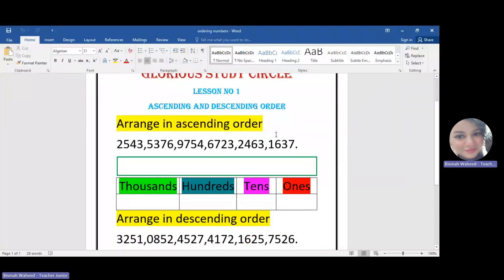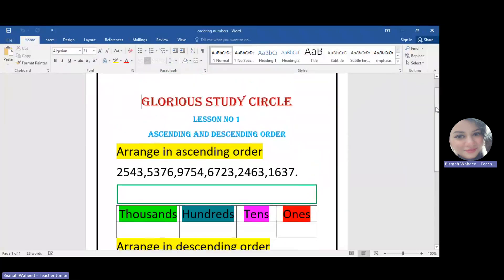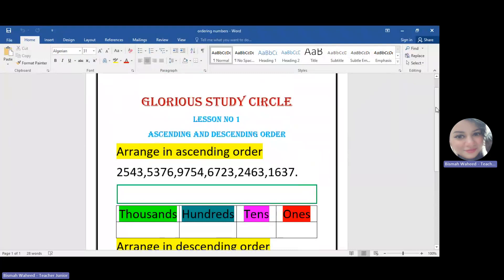First of all, we should know what does it mean by ascending order and what does it mean by descending order. Keep one thing in your mind: ascending means to move upward and descending means to move downward. Descending is from down, so descending means to move downward and ascending means to go upward.